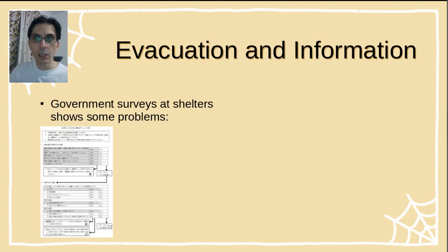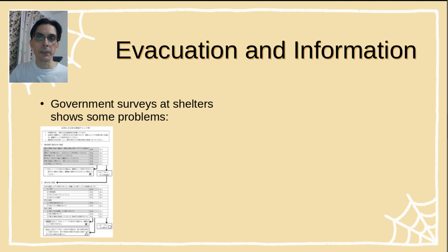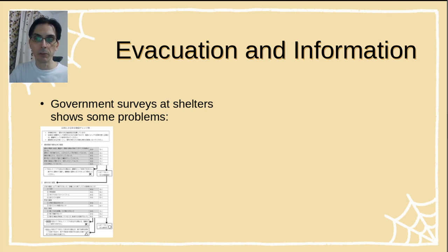Two, are the shelters over capacity or under capacity? To answer these questions, we need to think about how people behave during the evacuation. We create our model based on interviews made by the Japanese government with evacuees after large earthquakes in Japan, such as the Great Hanshin earthquake in 1995 and the Tohoku earthquake and tsunami in 2011. These interviews showed some issues that affect the success of an evacuation.